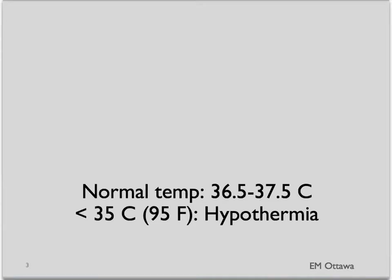What is normal temperature? In a normal physiological state, the body functions best between 36.5 to 37.5 degrees Celsius. Anything colder than 35 degrees Celsius or 95 degrees Fahrenheit is defined as hypothermia. You can have hypothermia of the whole body, or sometimes only part of the body is affected.